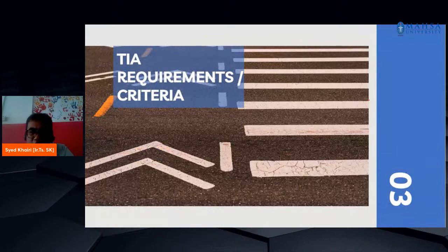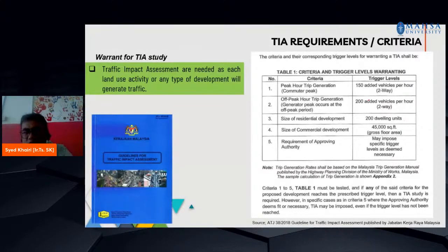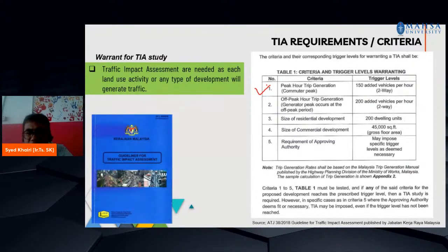What are the TIA requirements or criteria? TIA is needed when land use activity or development generates significant traffic. There are five criteria; if your project doesn't meet any of these five, you don't need to submit a TIA report. The first criterion is peak hour trip generation: the trigger level is 150 additional vehicles per hour in both directions on the road. The second criterion is off-peak hour trip generation: the trigger level is 200 additional vehicles per hour in both directions.